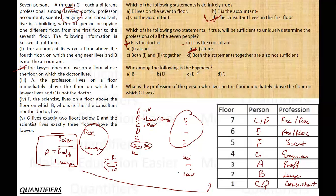Question 3: Among the following, G is an engineer. What is the profession of the person who lives on the floor immediately above the floor on which G lives? The answer is scientist — so that person is F.